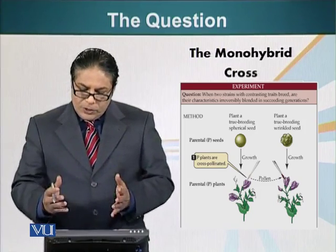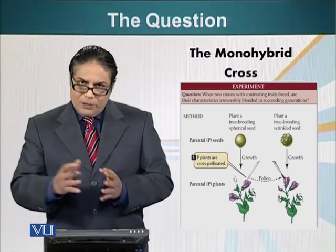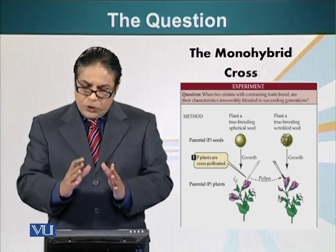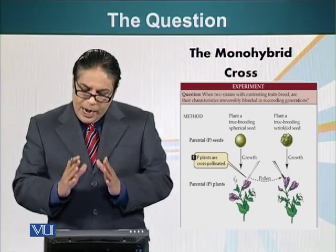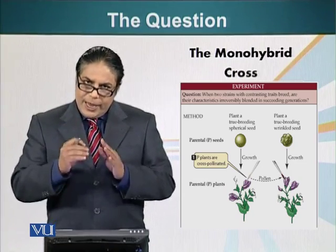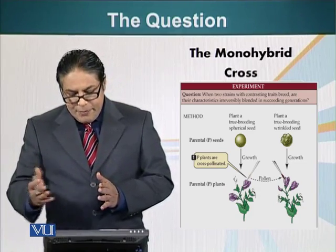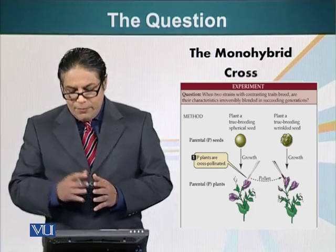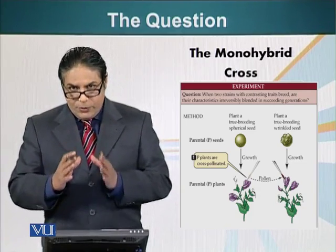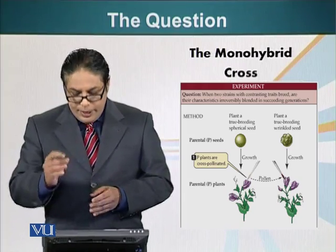He did this for several generations to ensure that the plant was now true breeding — that the trait it carries was completely spherical. He did the same exercise with plants that had wrinkled seeds, to ensure that these were also true breeding plants which produced wrinkled seeds.